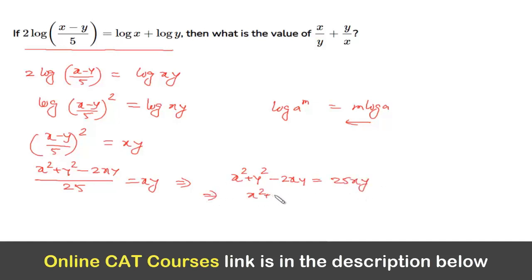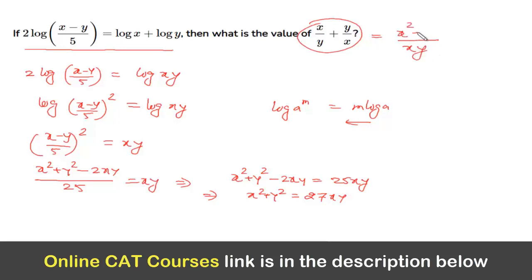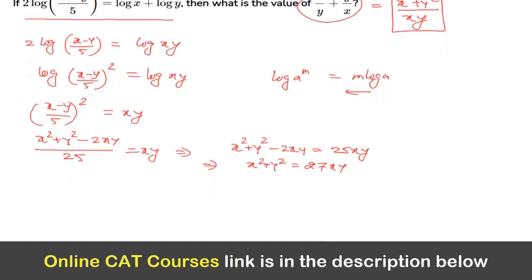This can be further written as x² + y² = 27xy. Now, dividing both sides by xy, we get (x² + y²)/xy = 27, which means x/y + y/x = 27. So the value of the expression is 27, and that is the answer for this question.